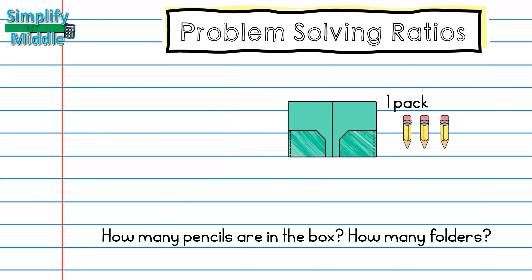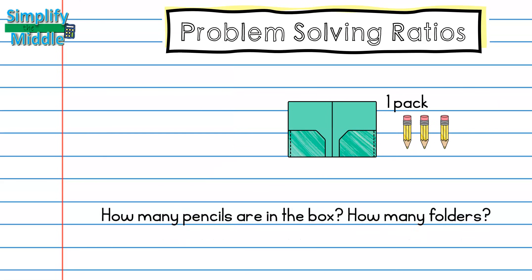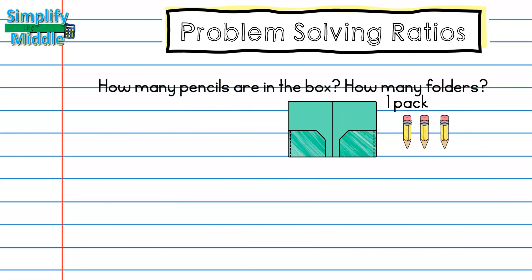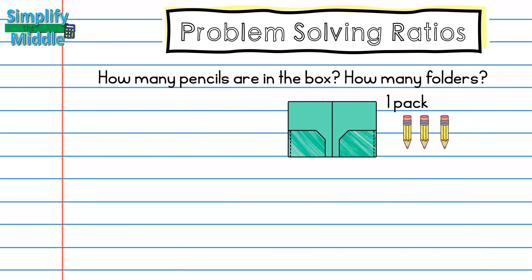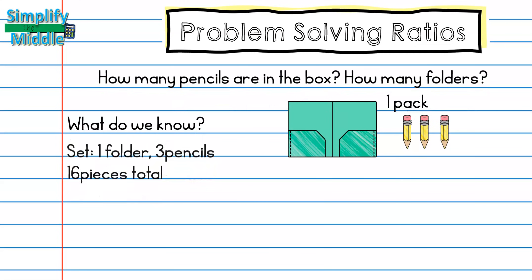When we're solving a problem like this we can first ask ourselves: what do we know? We know that when we have one full set it is one folder and three pencils, and we know we have 16 pieces total.